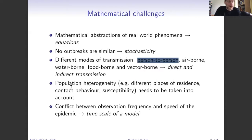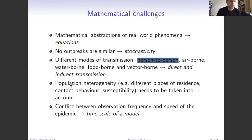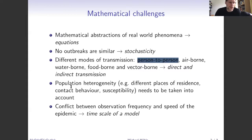Tom will talk more about population heterogeneity at a later stage. Not everybody is the same — you can have different places of residence, so there's a spatial component; contact behavior can differ between individuals; even susceptibility can be different. All of this needs to be taken into account when relevant for a particular problem. It's always important to balance how simple a model should be to be useful. The famous sayings are: 'models should be as simple as possible, but no simpler,' and 'all models are wrong, but some are useful.'